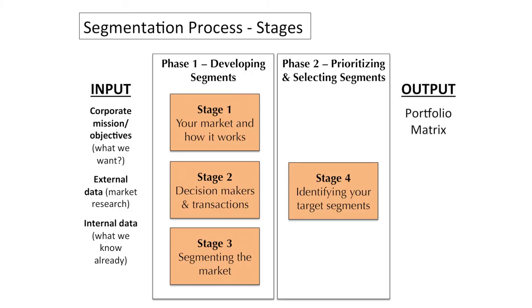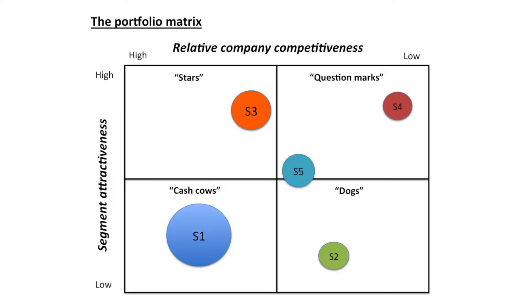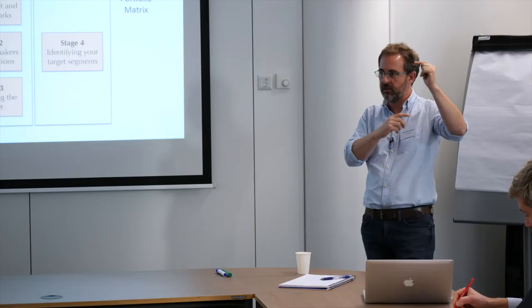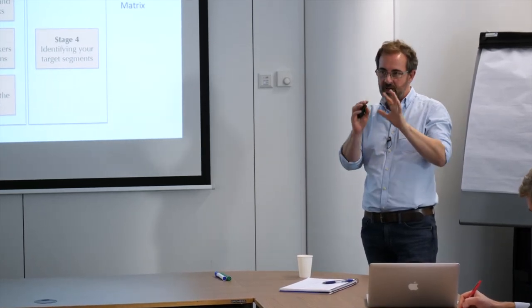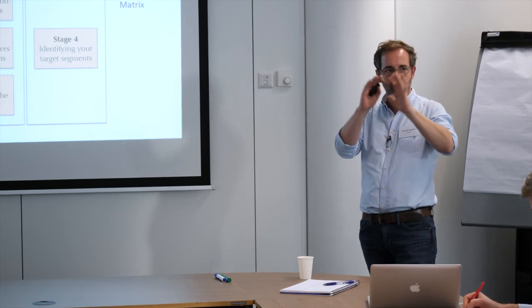We'll have what we call a portfolio matrix, where you can see according to how attractive a segment is, based on your own definition of attractiveness, and according to how competitive you are for that specific segment. You make four quadrants and see where each segment is located.